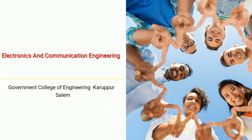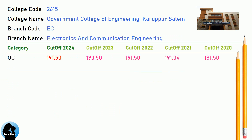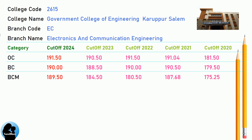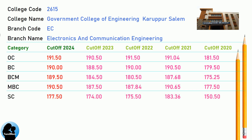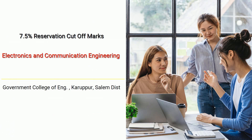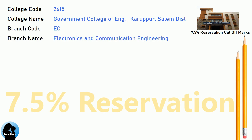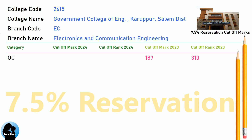BNEA Cut-off for Government College of Engineering, Karupur, Salem in Electronics and Communication Engineering. BNEA 7.5 Reservation Cut-off for Government College of Engineering, Karupur, Salem District in Electronics and Communication Engineering.